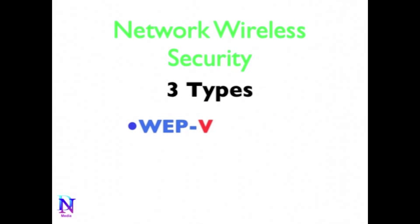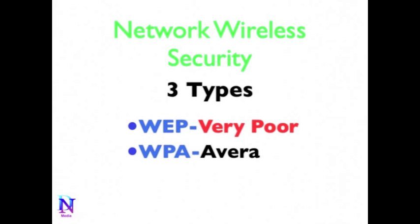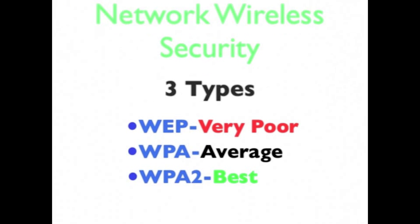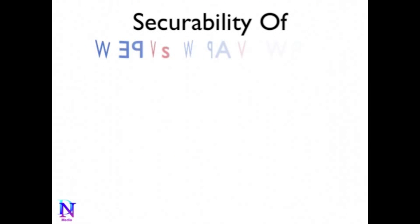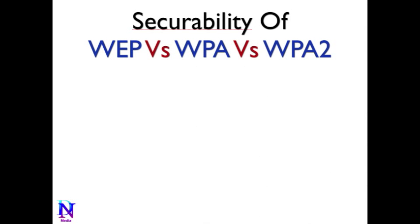WEP, which is very poor. WPA, which is average. And WPA2, which is the best. Let's take a look at the differences between WEP versus WPA and WPA2.